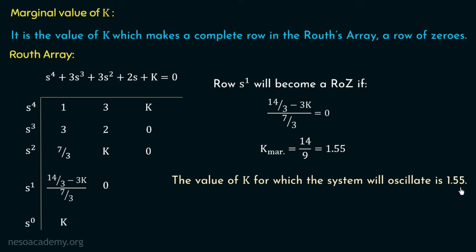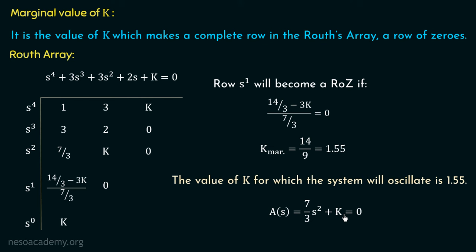To calculate the frequency of sustained oscillations, we assume the system is operating at k = k_marginal = 1.55. With the s¹ row being a row of zeros, we form the auxiliary equation using the coefficients of the s² row: A(s) = (7/3)s² + k = 0. The auxiliary equation only has even powers of s, so we use alternate coefficients.